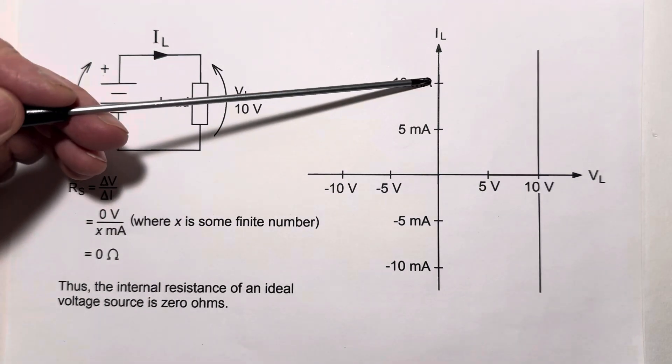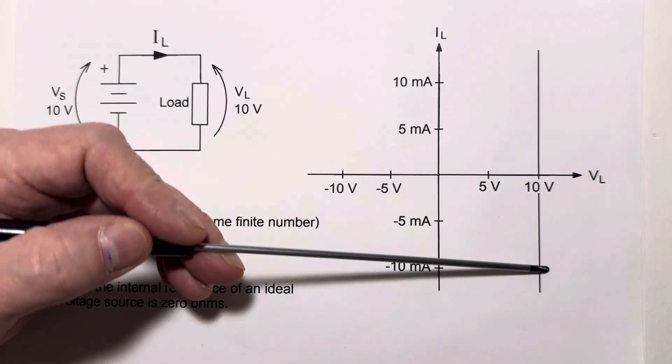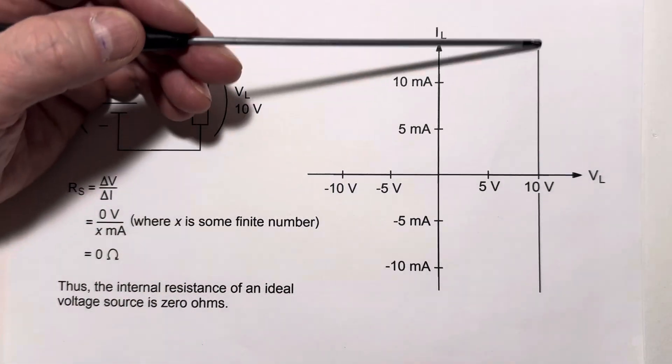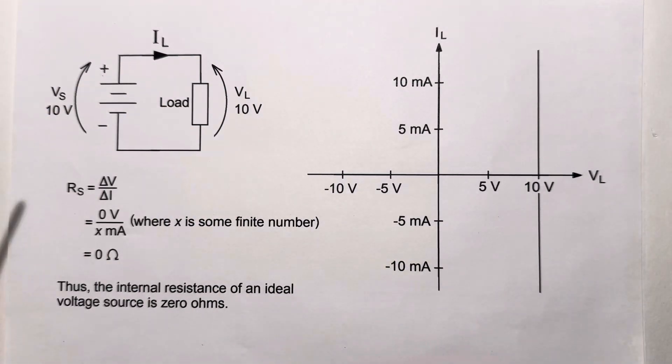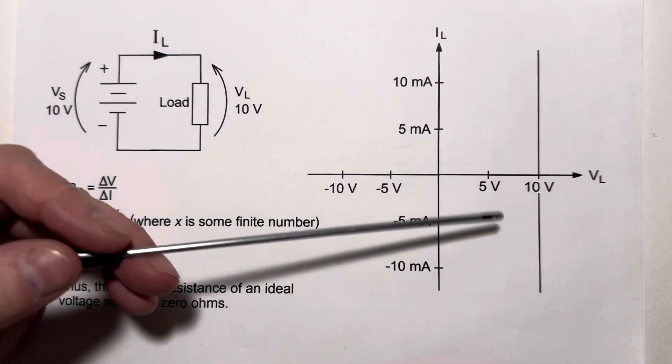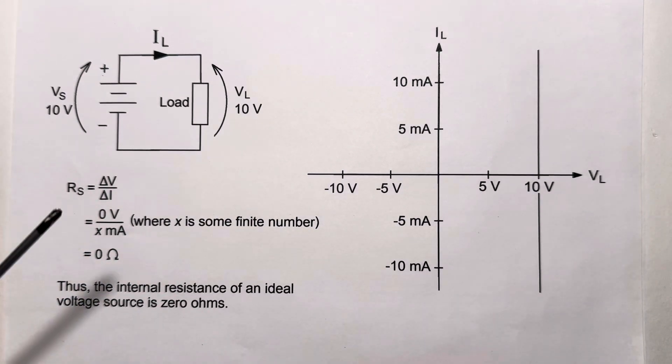So, if we have 10 milliamps, we have 10 volts. If we have negative 10, we still have 10 volts. So, we have a vertical line here. And remember, whenever we plot current as a function of voltage, whenever the line is vertical, we have zero resistance.